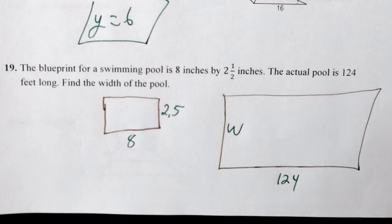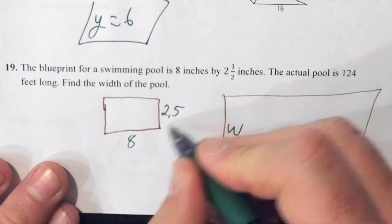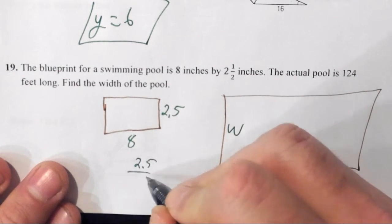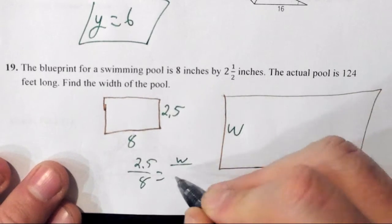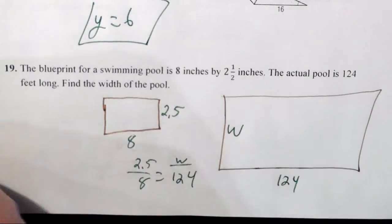All we're going to do is set up our proportions and then cross multiply and divide. 2.5 over 8 is equal to W over 124. So let's go ahead and do that math.